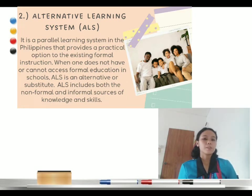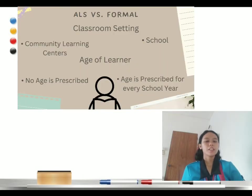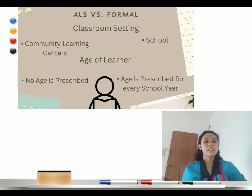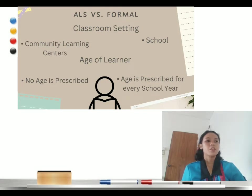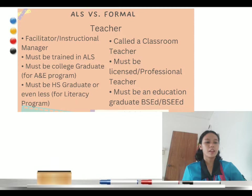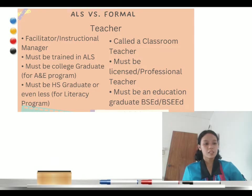Take a look at the comparison of the alternative learning system versus the formal. In a classroom setting, the ALS uses community learning centers while formal is normally in school. In age of learner, in ALS no age is prescribed, while in formal, age is prescribed for every school year. For teacher, in ALS the role is facilitator and instructional manager — must be trained in ALS, must be a college graduate, and must be a high school graduate for evenness.